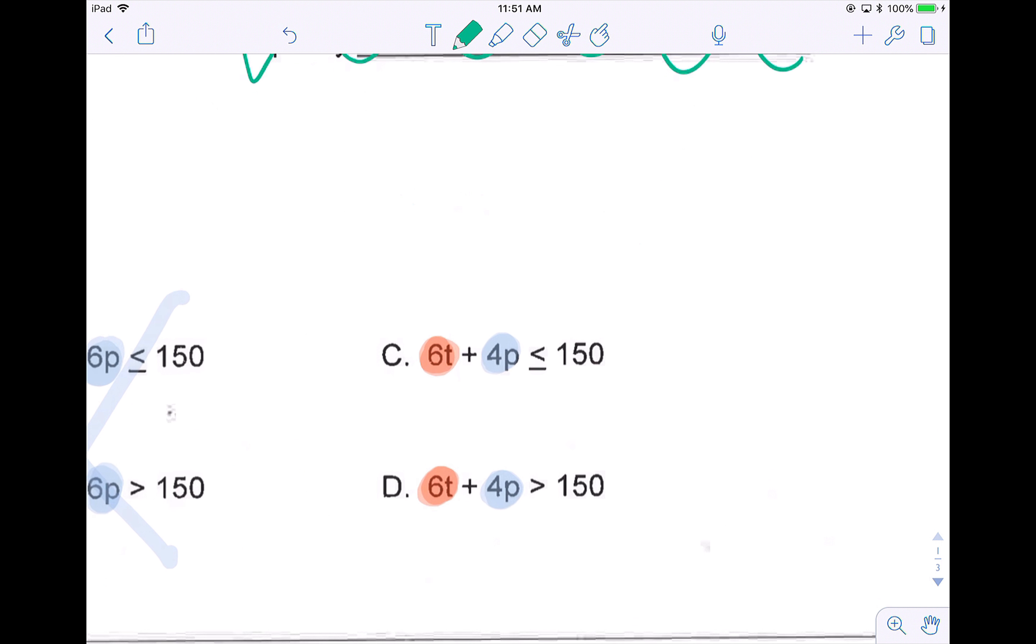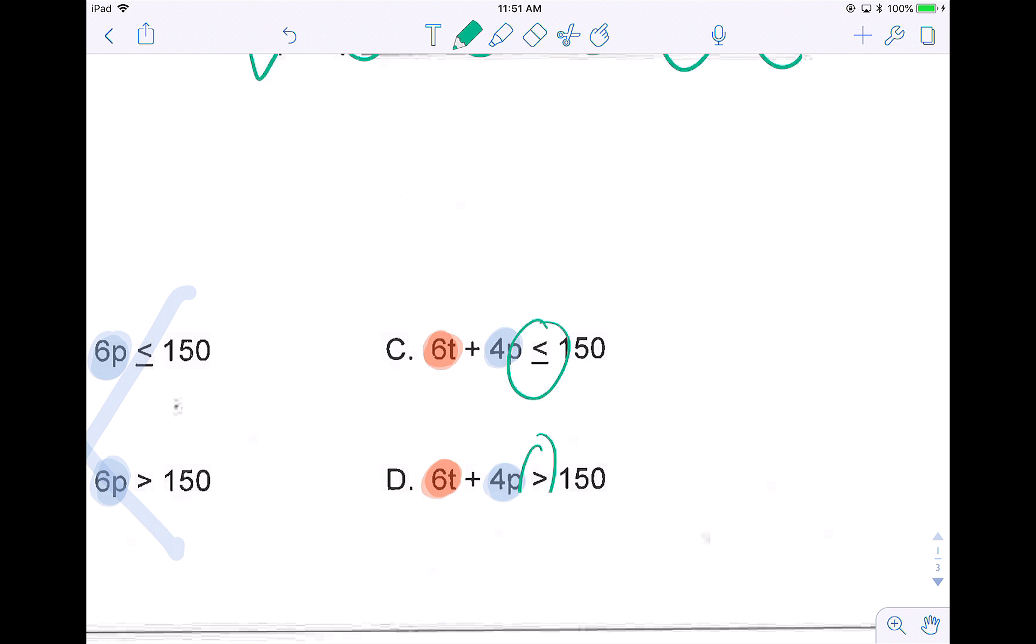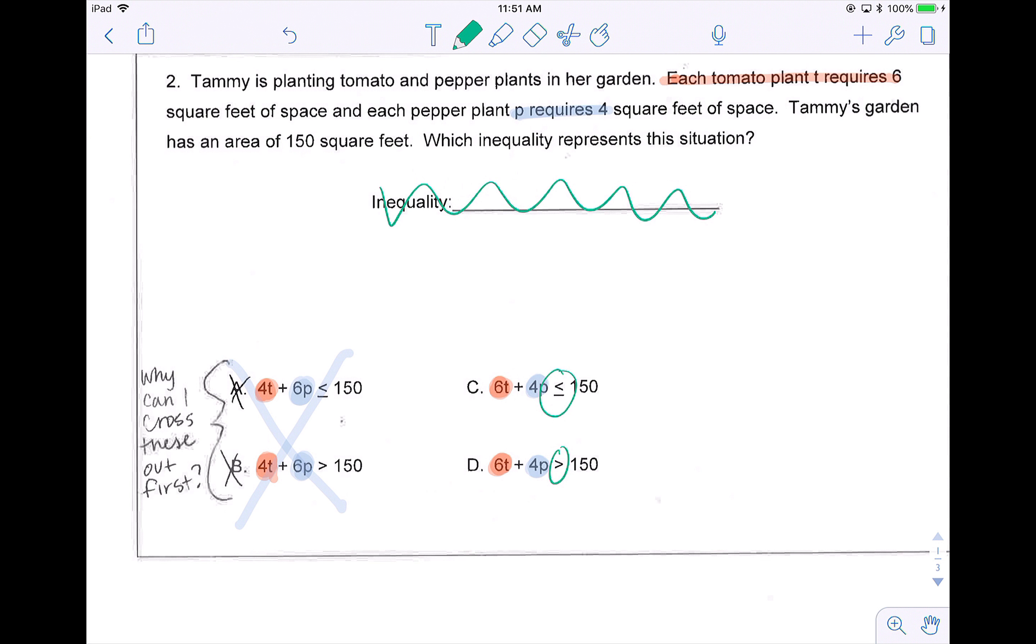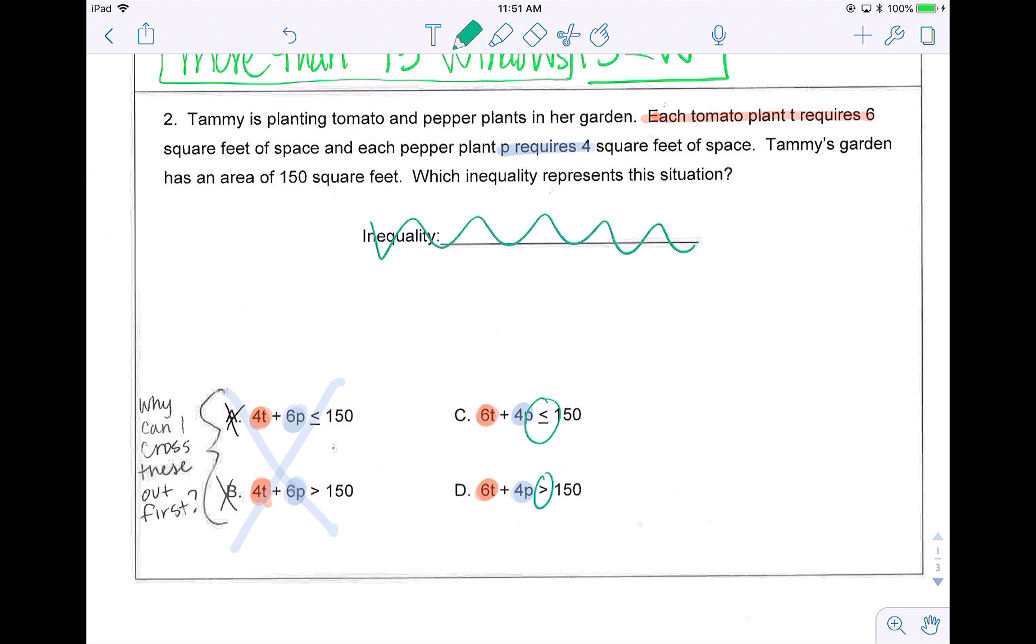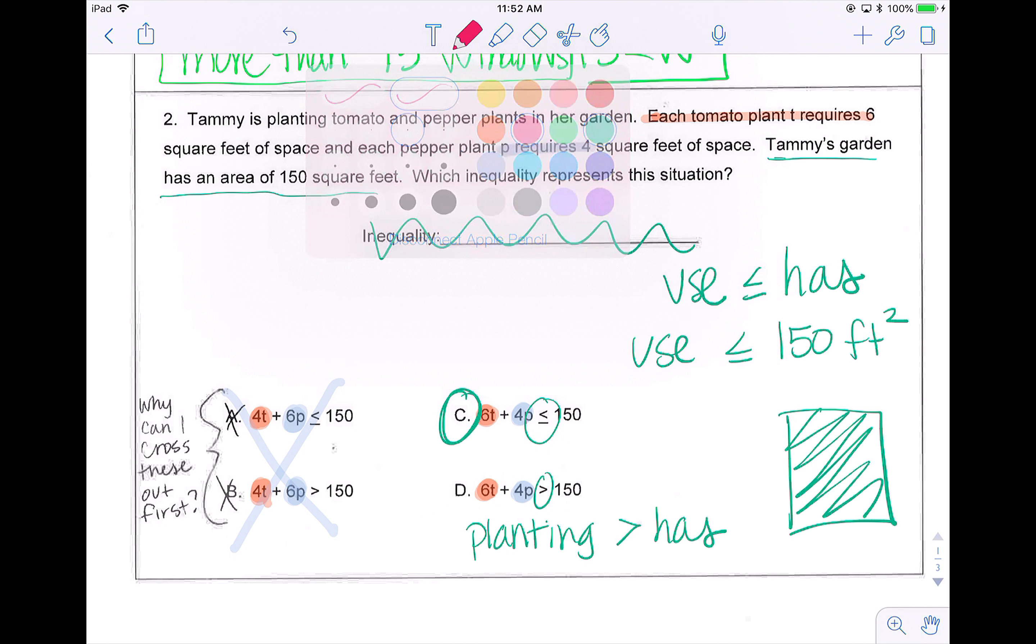When I look at C and D, the only difference is those inequalities. So I'm going to try to figure out which inequality is incorrect. If I know that her garden has an area of 150 square feet, then she can't use more space than she has. So the space she uses needs to be less than or equal to the space she has. So that's going to be answer choice C. This is saying what she's planting can be greater than the area that she has. Well, if you only have a garden with this area, you can't go outside of it. So that would not be correct for answer choice D.